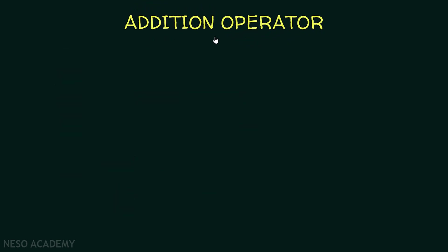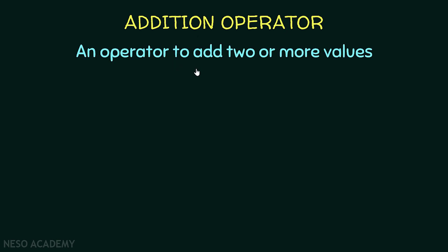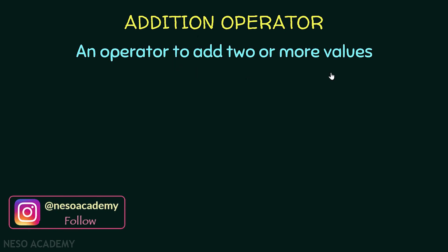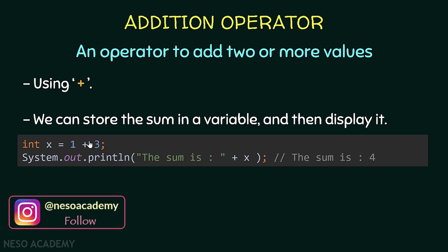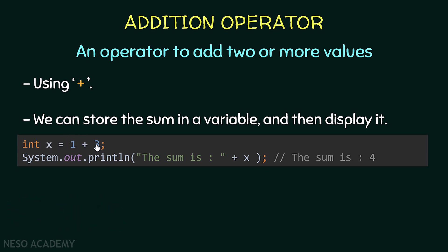You already know the addition operator. It is used to add two or more values, and we use the plus sign. For example, we can store the sum inside a variable and then display it. We are initializing a variable x to be equal to 1 plus 3. So 1 will be added to 3 and the result will be stored inside x. And after that, we are printing x, so we'll see this output: the sum is 4.